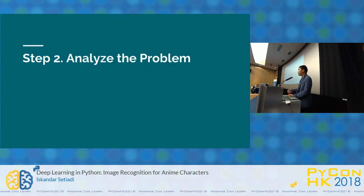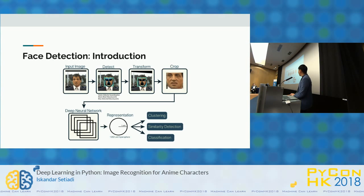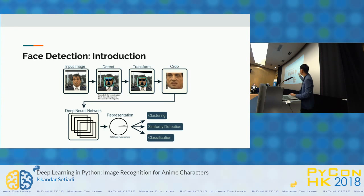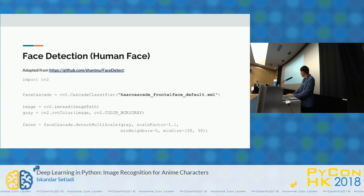We already have the environment — TensorFlow — and the dataset. The next step is analyzing the problem. For human face recognition, the first step is to detect where the face is located, then transform it — adjust for tilt or sideways orientation — before passing it to the deep neural network, where you can do clustering, similarity detection, or classification. To do this, I'm using a cascade classifier with a Haar cascade model to detect the face. The result is satisfying — it can detect all faces in a photo.